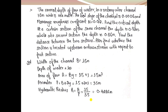Problem 4: The normal depth of flow in a rectangle channel 1.5 meters wide is 1 meter. Bed slope is 0.0006 and Manning's roughness coefficient n = 0.012. Find the critical depth. At a certain section the depth is 0.92 m; at a second section the depth is 0.86 m. Find the distance between the two sections and whether the second section is upstream or downstream.